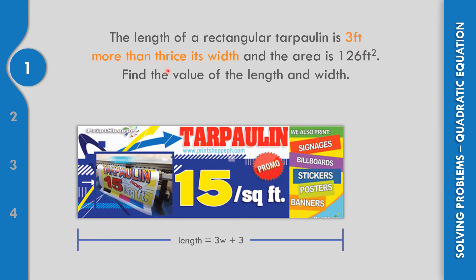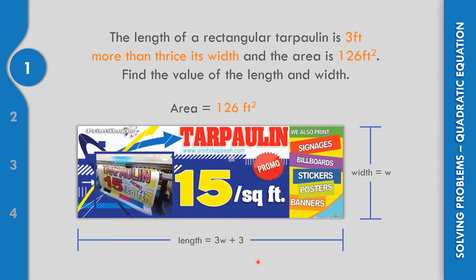So the length is 3W plus 3. And this one could be the width. So if this is the length, this is the width. And the area of the tarpaulin is 126 square feet.